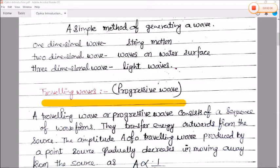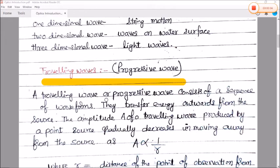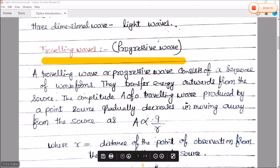Next is traveling wave or progressive wave. A traveling wave or progressive wave consists of a sequence of waveforms. They transfer energy outward from the source. The amplitude A of the traveling wave produced by the point source gradually decreases in moving away from the source.